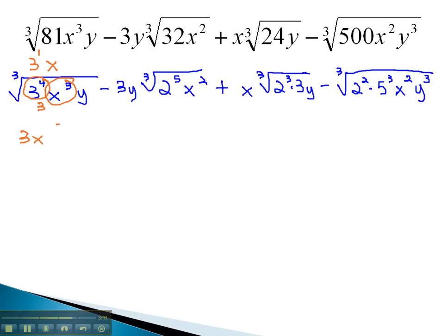We now have 3x times the cube root of 3y, minus 2 to the 5th. When we divide that exponent by 3, we get 1, but there's also a remainder of 2. 2 times 3 on the outside gives us 6y times the cube root of 2 squared, or 4x squared.